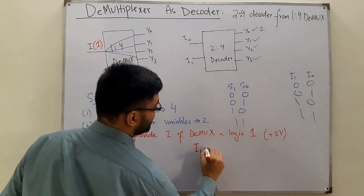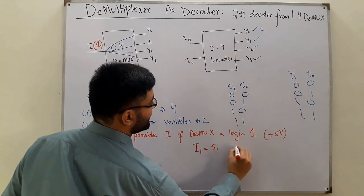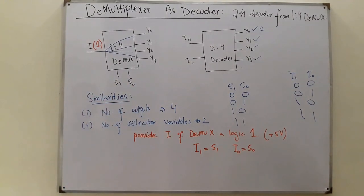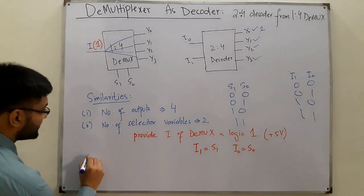How? If you provide logic one to the input of the demultiplexer and replace the input lines—I1 equals S1 and I0 equals S0—you replace the select lines also. Similarly, you can have a 3x8 decoder.